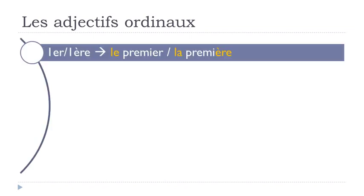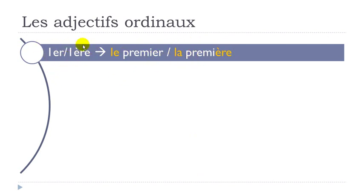We'll start with the first. As usual in French, remember, we've got the difference between the masculine form and the feminine form. So each time we'll have the masculine form and the feminine form. Here's the way you can see them written when you make them short — they can be written like that. So we'll pronounce them.